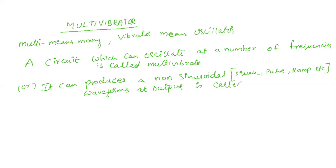This is the basic definition of a multivibrator. The multivibrator name indicates many oscillations — a circuit which can oscillate at a number of frequencies, or we can also define it as a non-sinusoidal waveform generator, which produces non-sinusoidal signals at the output.